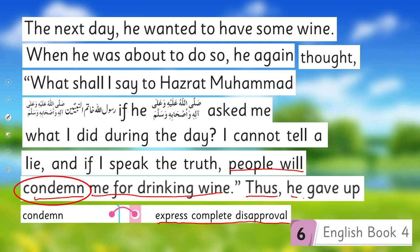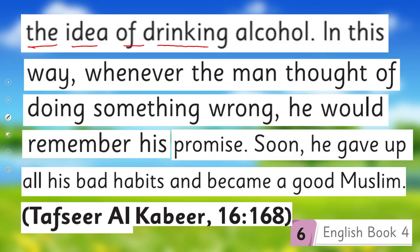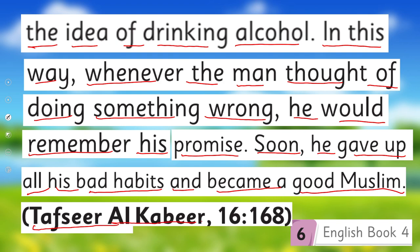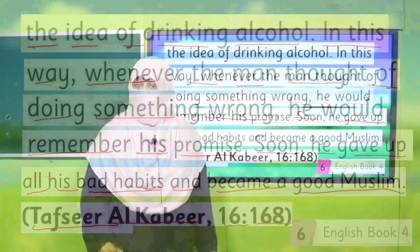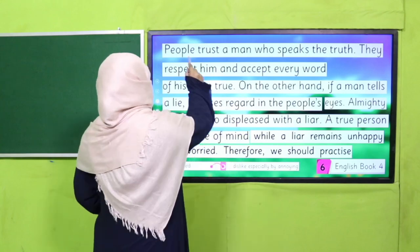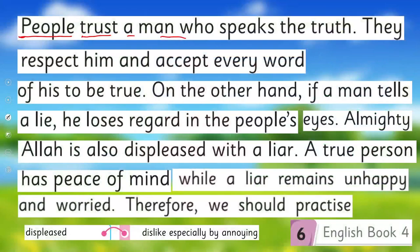So he said people will condemn — meaning disapprove of — him for drinking wine. Thus he gave up the idea of drinking alcohol. In this way, whenever the man thought of doing something wrong, he would remember his promise. Soon he gave up all his bad habits and became a good Muslim. This incident has been mentioned in Tafsir al-Kabir 16168.